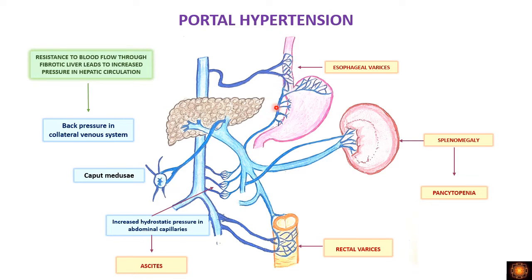The increased pressure in the collateral venous system causes bulging of vessels in the esophagus, rectum, and abdominal vessels. This results in esophageal varices prone to bleeding, rectal varices, and leakage of fluid from abdominal vessels leading to ascites. The back pressure in the portal vein also increases pressure in the splenic vein, causing congestive splenomegaly, which leads to pancytopenia.